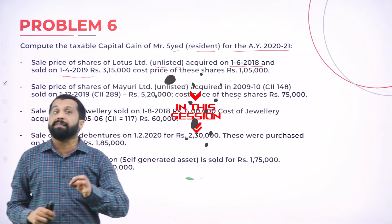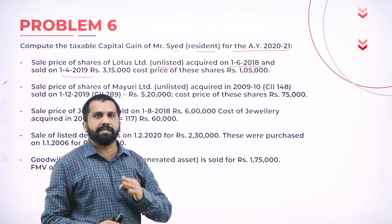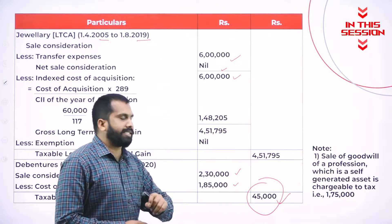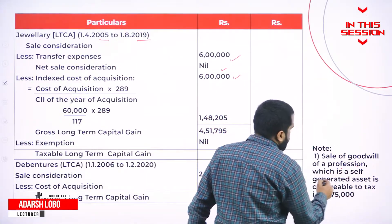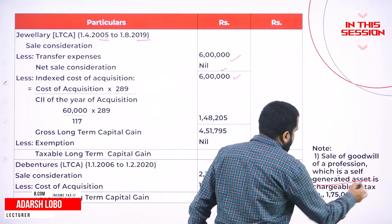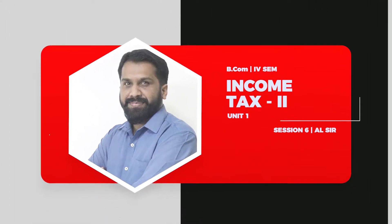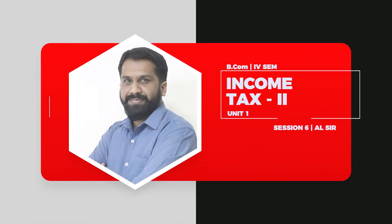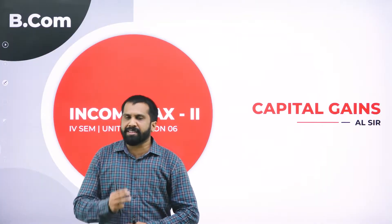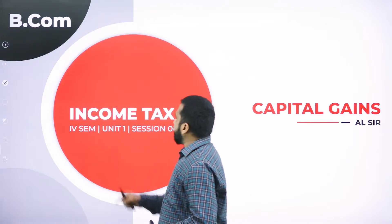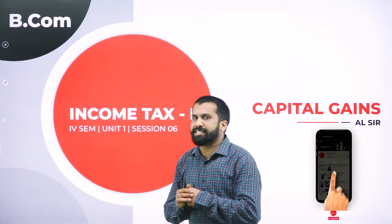Listed shares come under 12 months. Unlisted comes under 24 months. For debenture, we don't consider indexation. A warm welcome to one and all. This is your Adhasa here. We are discussing Session 6, Unit 1 of your Income Tax 2.